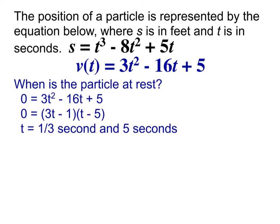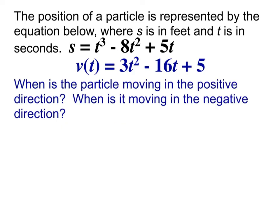Now that we know when it was at rest, it's going to allow us to figure out some other stuff that wasn't as obvious otherwise. The next thing is to figure out when this particle was moving in the positive direction and when it was moving in the negative direction — whole intervals of when. Let's think about how we can know that. I'm going to make a rough sketch of our graph. That's our original function — it was moving in the positive direction for part of it and the negative direction for part of it.